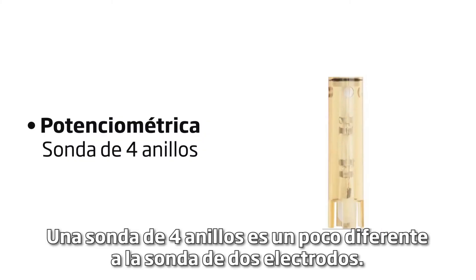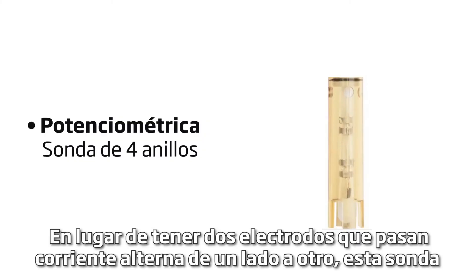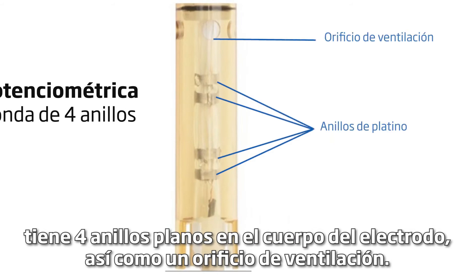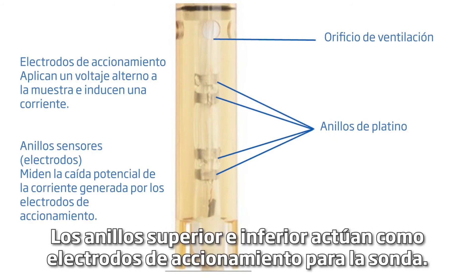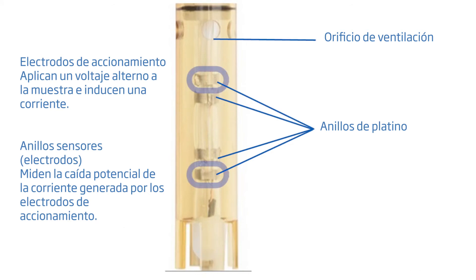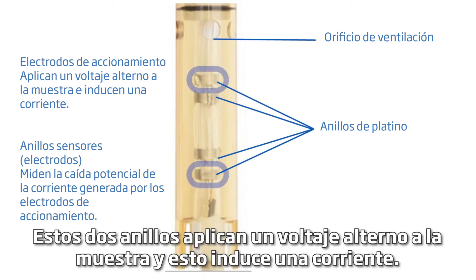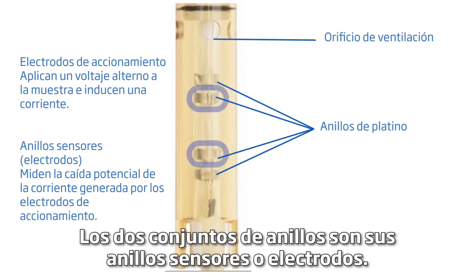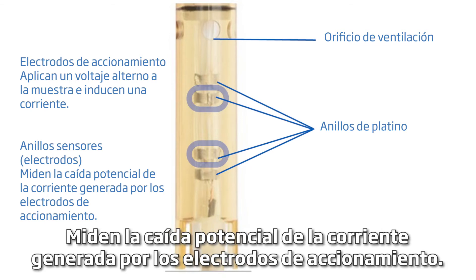A four-ring probe works a bit differently than the two-electrode probe. Instead of having two electrodes that pass an alternating current back and forth, this probe has four platinum rings on the body of the electrode, as well as a vent hole. The top and bottom rings act as drive electrodes — these two rings apply an alternating voltage to the sample and this induces a current. The two center rings are your sensor rings, or electrodes, and they measure the potential drop in the current generated by the drive electrodes.